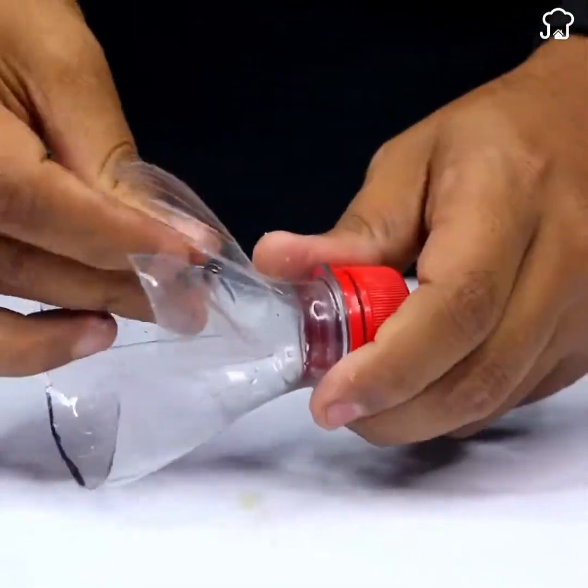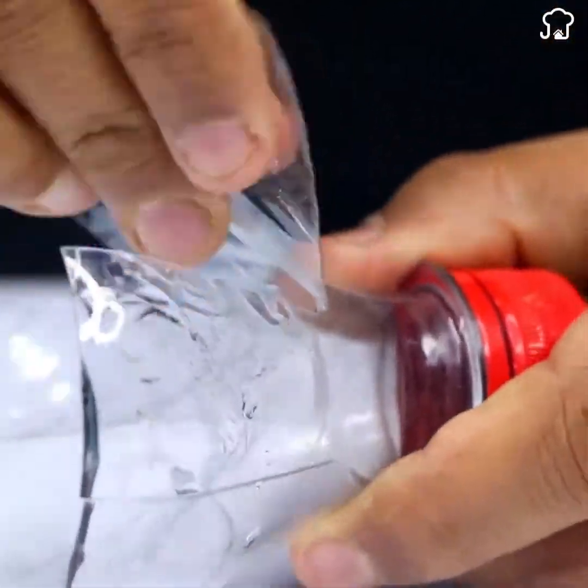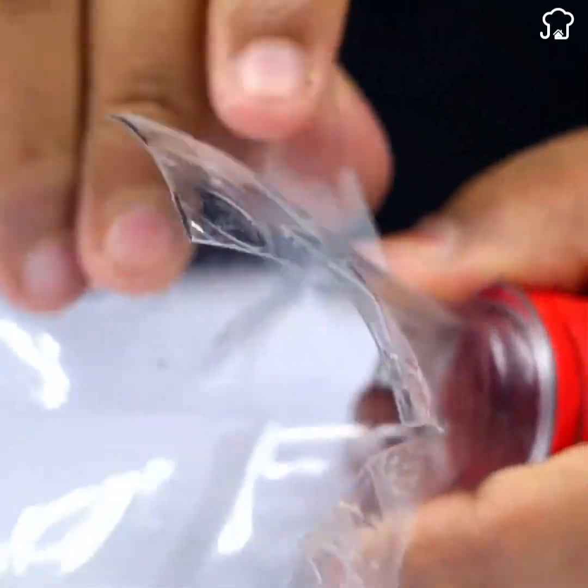Next, we're going to open the bottle with our hands so it looks like a fan blade. This will be what helps to move the toy car.